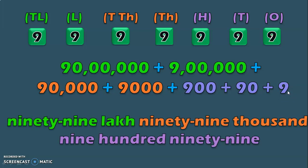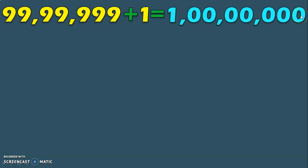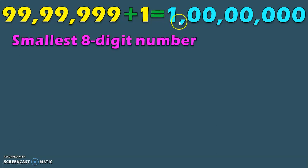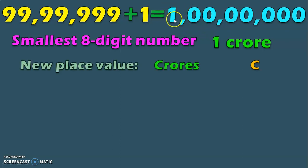So the number name for the greatest 7 digit number is 99 lakh 99,999. What will happen if you add 1 to this greatest 7 digit number? You will get an 8-digit answer — a 1 followed by 7 zeros — which makes the smallest 8 digit number. We are learning a new place value called crores in 8 digit numbers, and it is represented by the letter C.